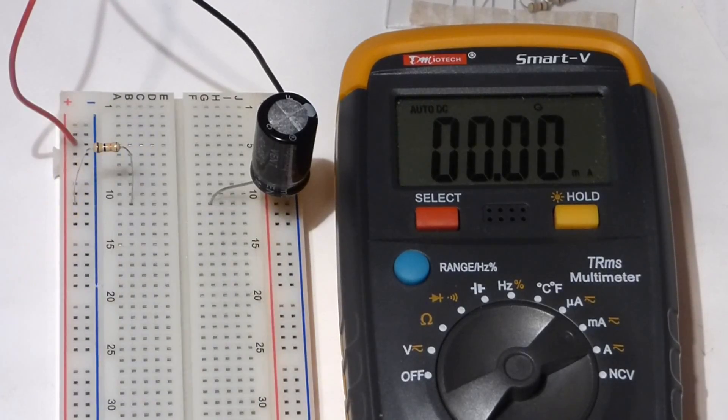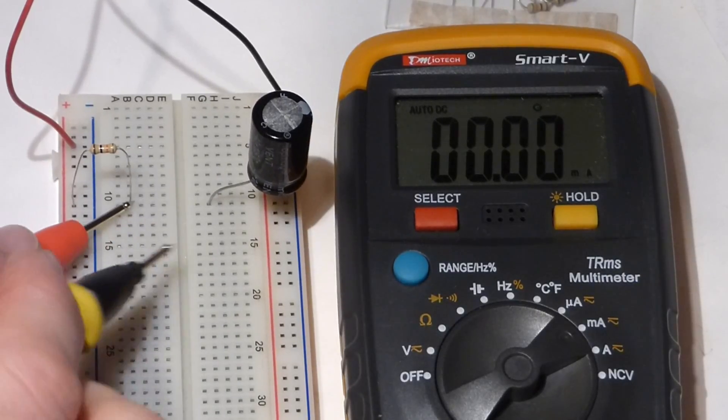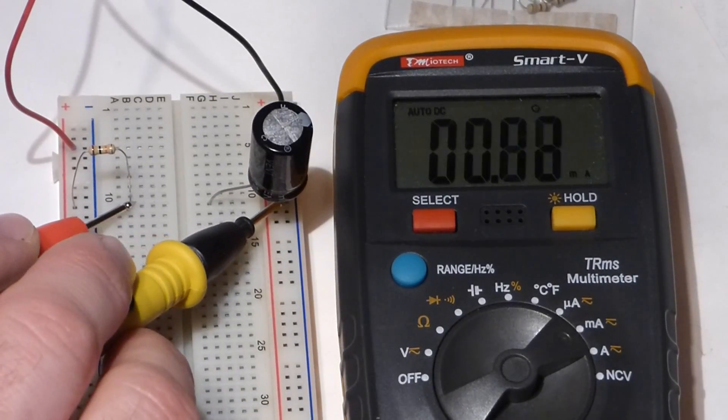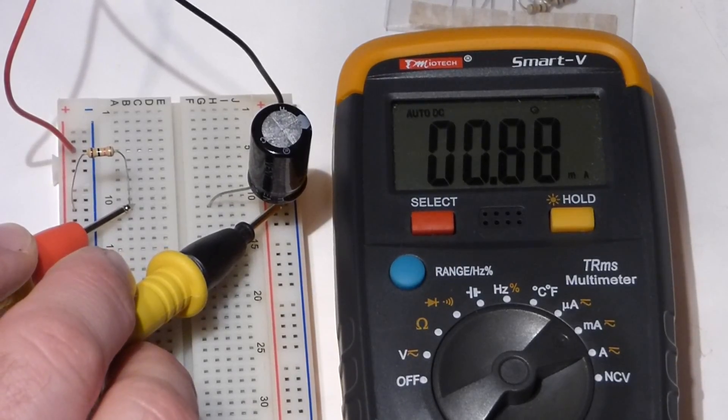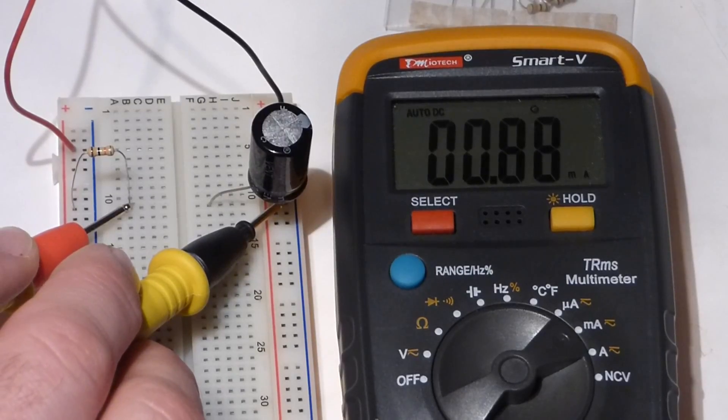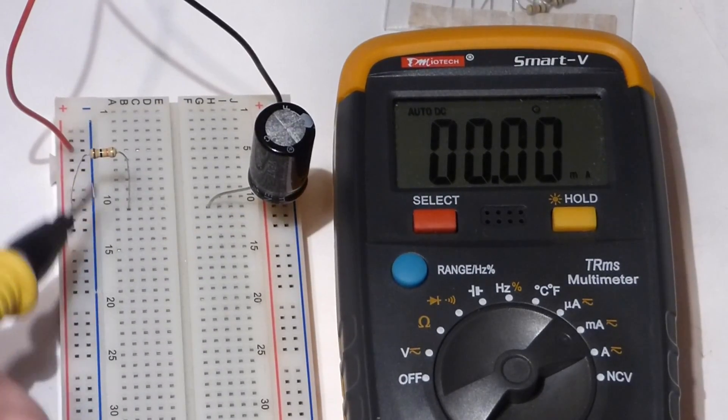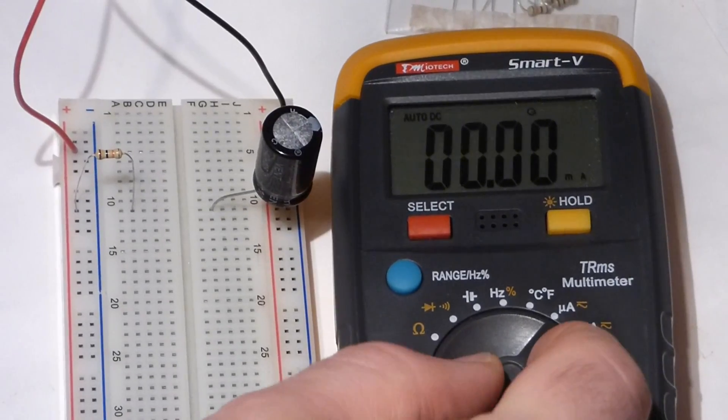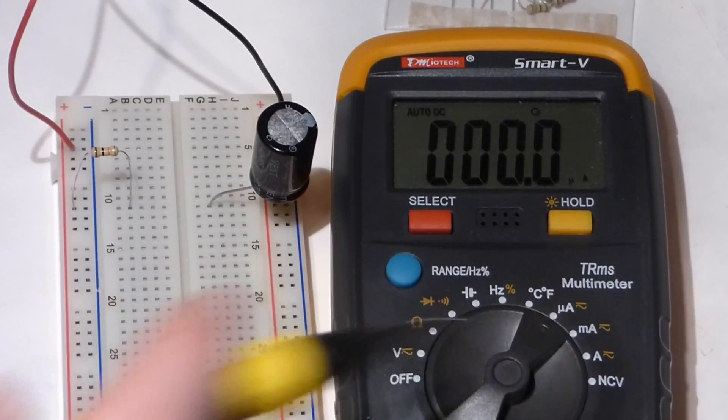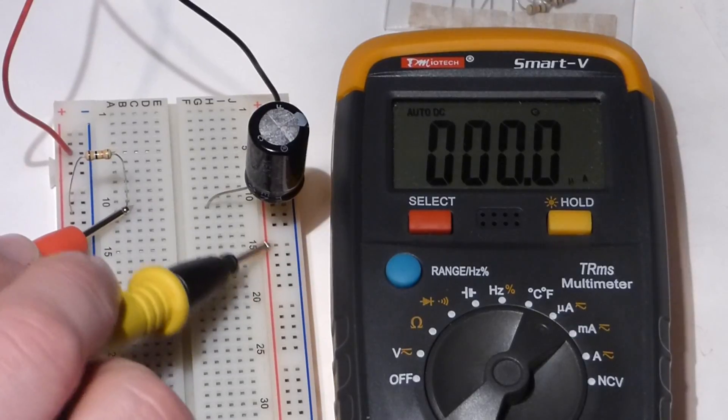Now before we start charging the capacitor, I want to point out that I picked this resistor to make sure we have less than 1 milliamp of current. This is 0.88 milliamps of current. This is a 10 kiloohm resistor. And the reason why I did that is because I want to do this in microamps.